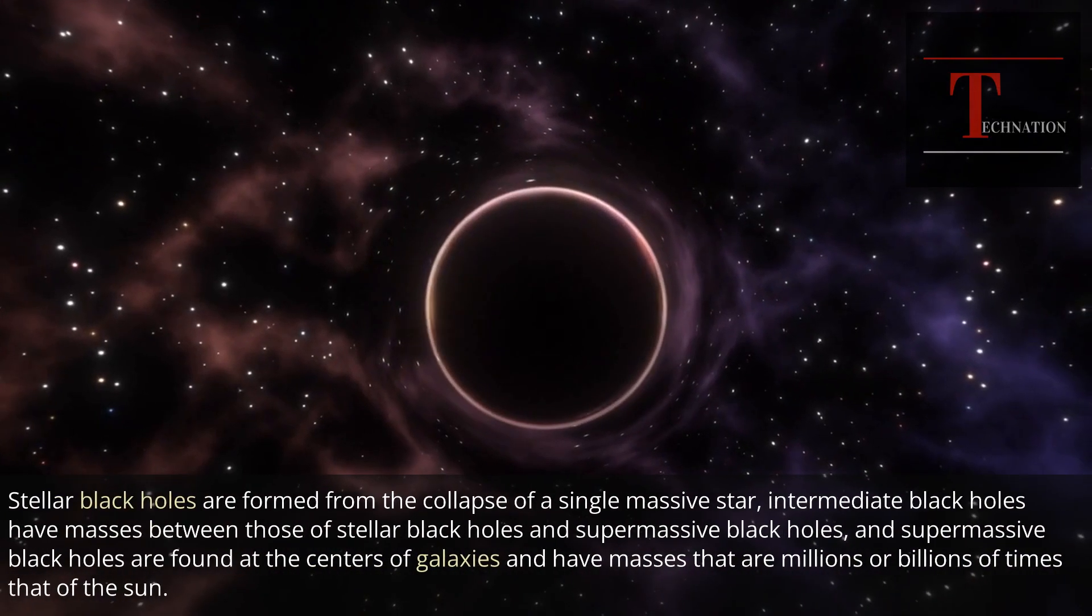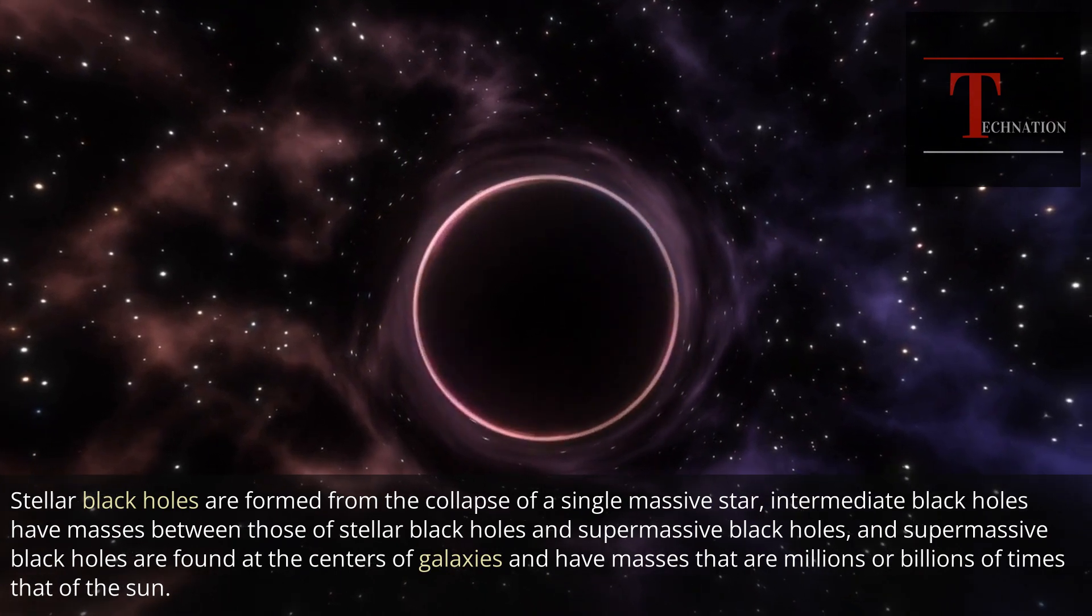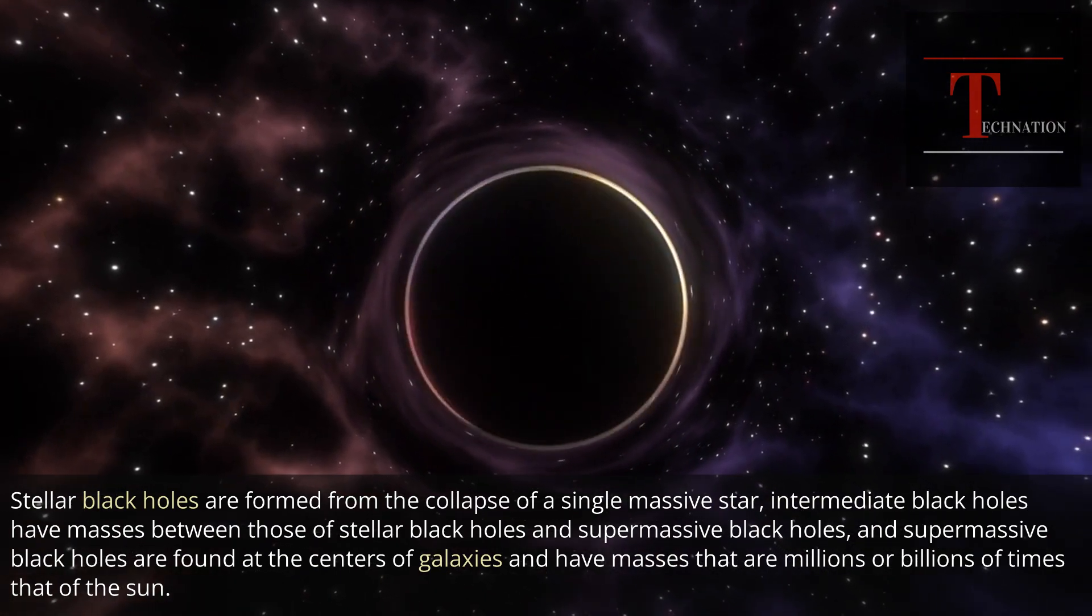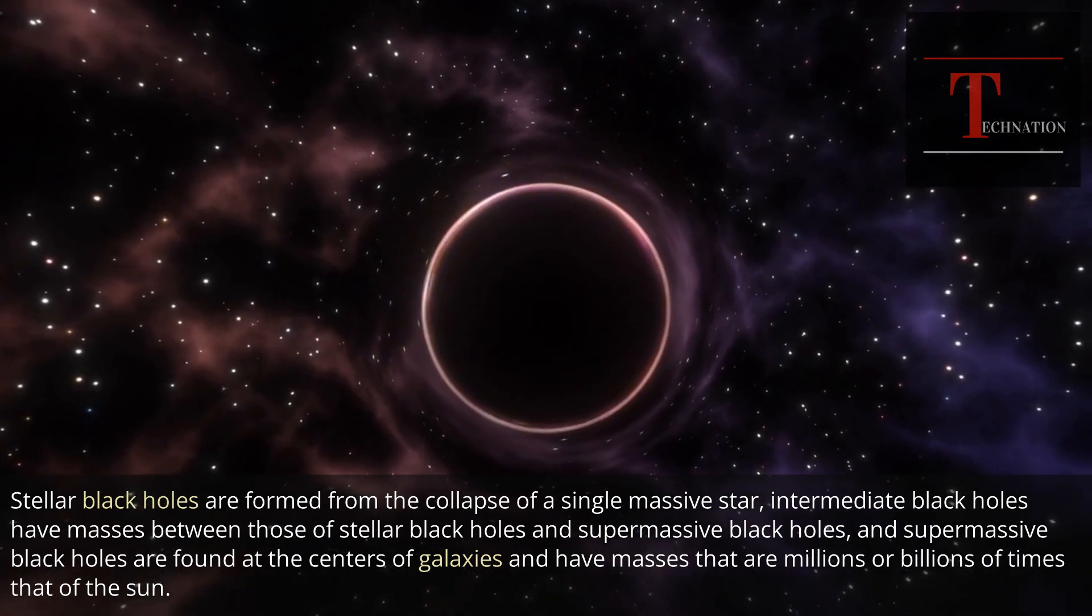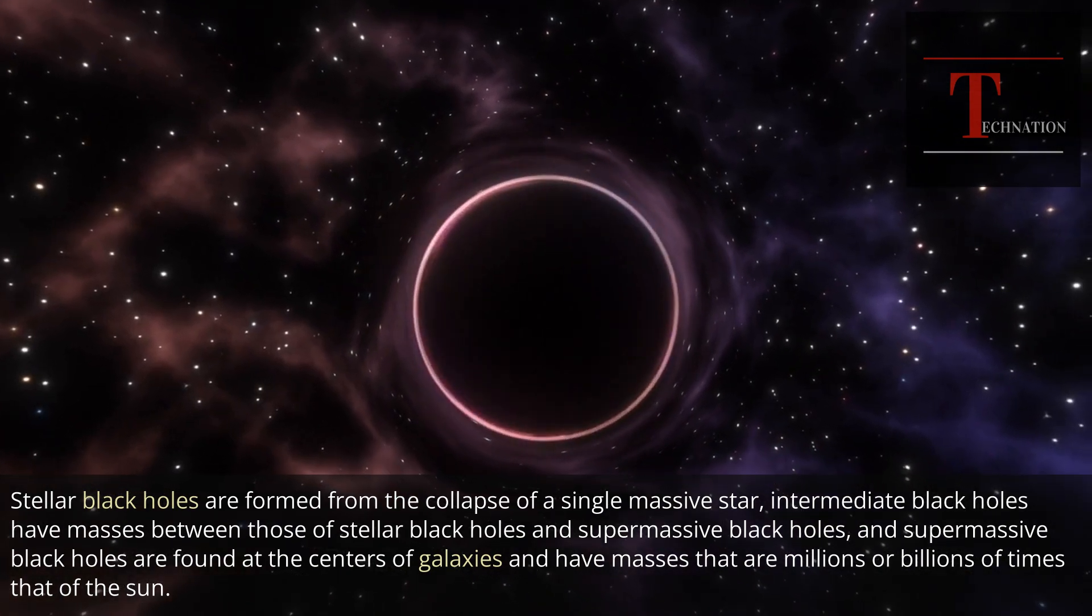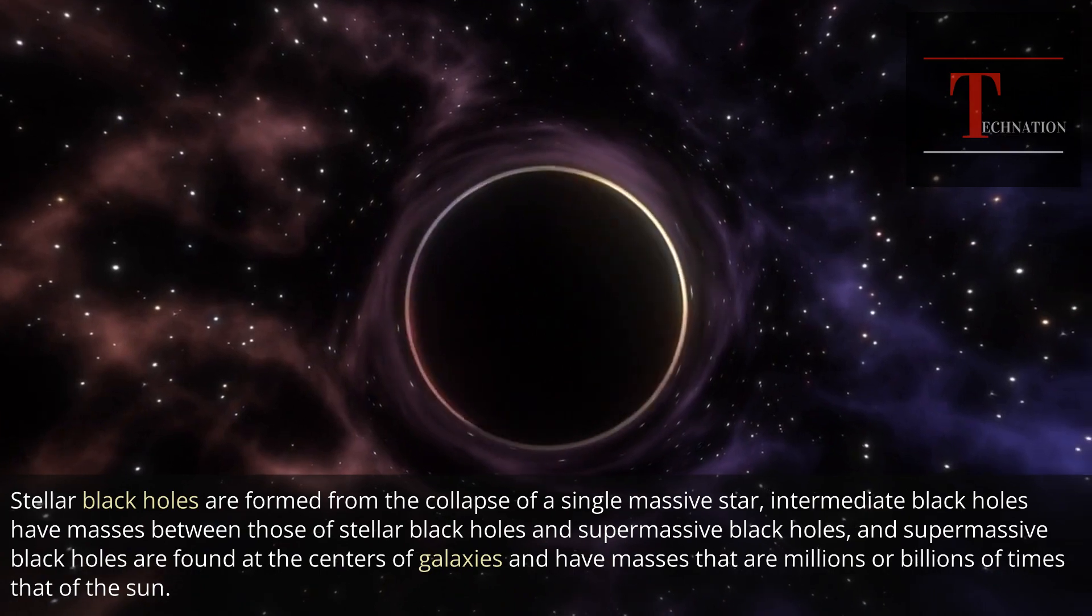Stellar black holes are formed from the collapse of a single massive star, intermediate black holes have masses between those of stellar black holes and supermassive black holes, and supermassive black holes are found at the centers of galaxies and have masses that are millions or billions of times that of the Sun.